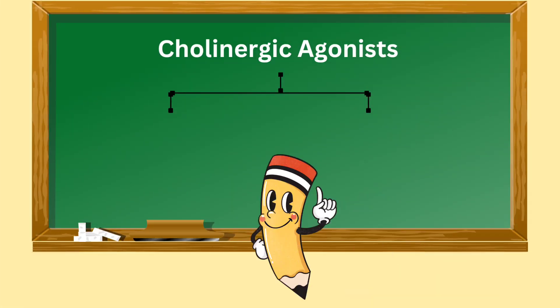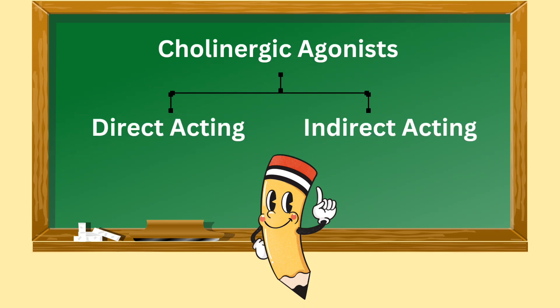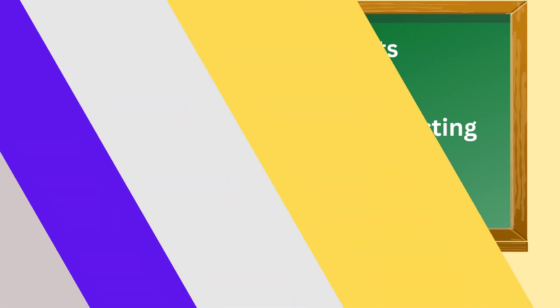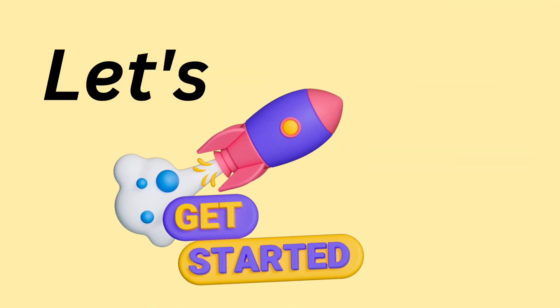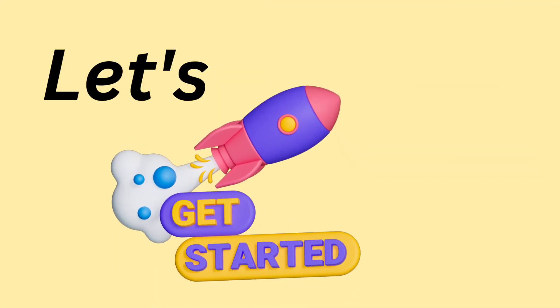First, let's go through some basic classification. Cholinergic agonists can be direct acting cholinergic agonists and indirect acting cholinergic agonists. Let's get started with the direct acting cholinergic agonists.